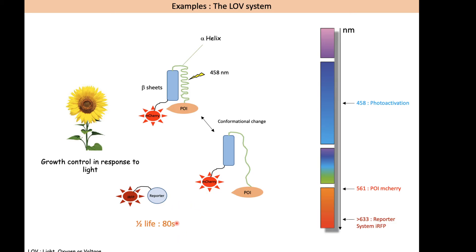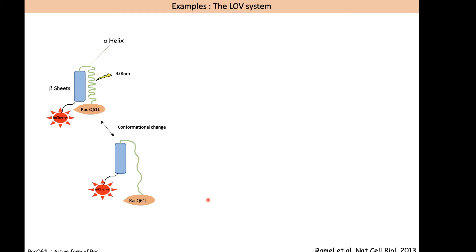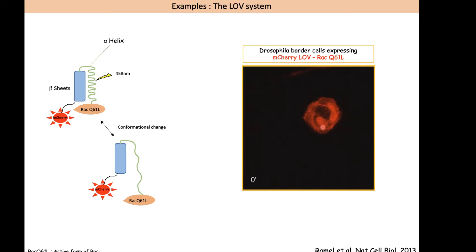The LOV system is very suitable for controlling active proteins such as small GTPases. What was done here is to fuse the LOV system with Rac1 Q61L, the constitutively active form of Rac. In the dark, when the conformation is closed, the molecule is trapped and blocked as an inactive molecule. When light is applied, the opening of the LOV system liberates the active form of Rac, which can then regulate actin dynamics and cell migration. This is shown in a movie of border cells expressing this construct — at the beginning they are round and unable to migrate, but upon stimulation Rac activation at the front of the migrating group drives their migration.